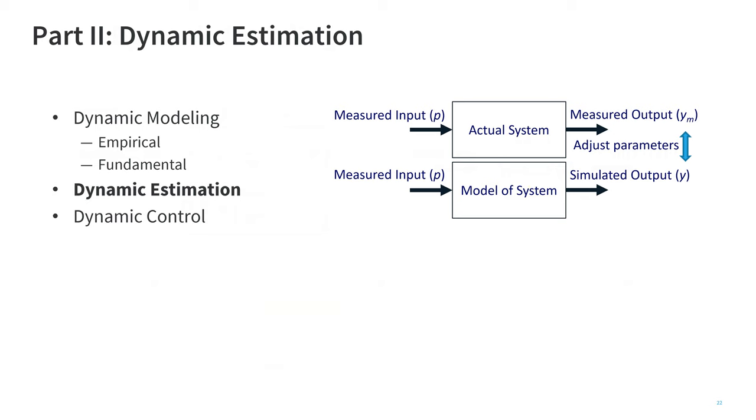And then when we go on to dynamic estimation, we're going to have our digital twin, which is below, and the actual system, which is above. And we have measured inputs, p. And we're going to compare the measured output, y sub m, to the simulated output, y. And we're going to adjust parameters to make our model align with the measured output.